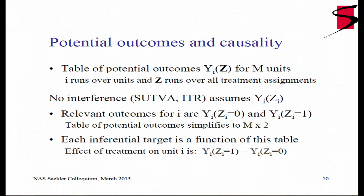Let me step back and remind everyone about one of the approaches to causal inference using potential outcomes. The fundamental object is the table of potential outcomes. Y_i is a function of bold Z — a binary vector of size M telling who is treated and who is not. The typical assumption is no interference, or SUTVA. The no interference assumption assumes that the potential outcome for Y_i is only a function of the treatment you give to individual i. That simplifies things: all the relevant outcomes for unit i are just two — whether or not you assign the treatment to this person.